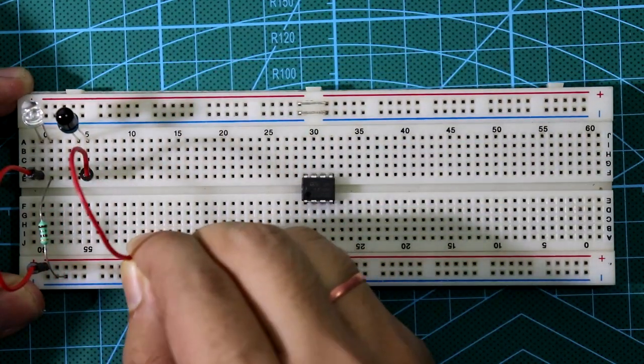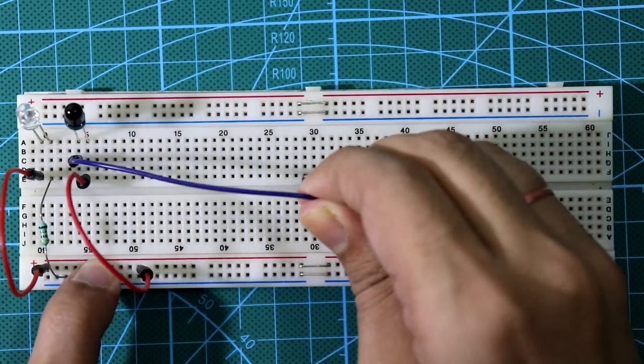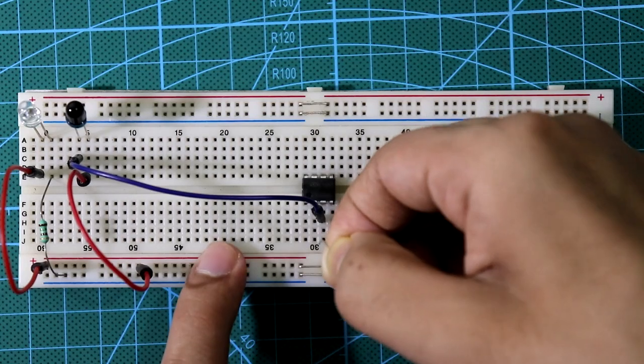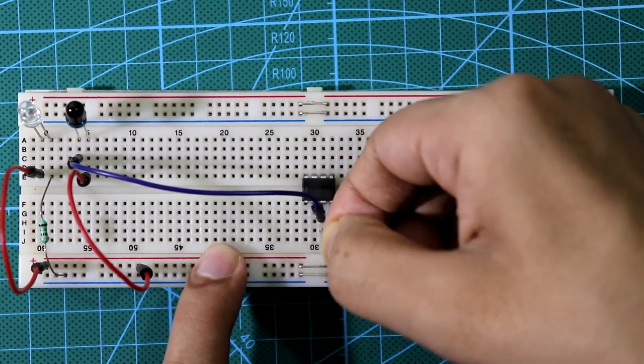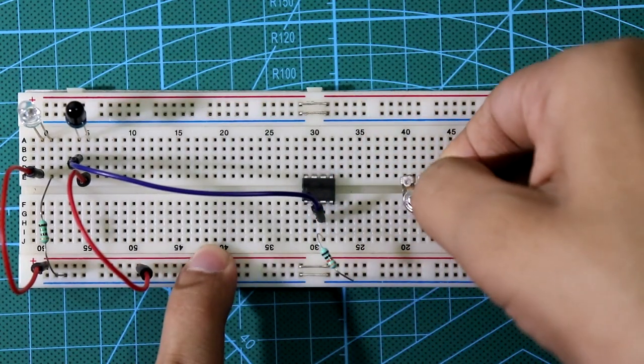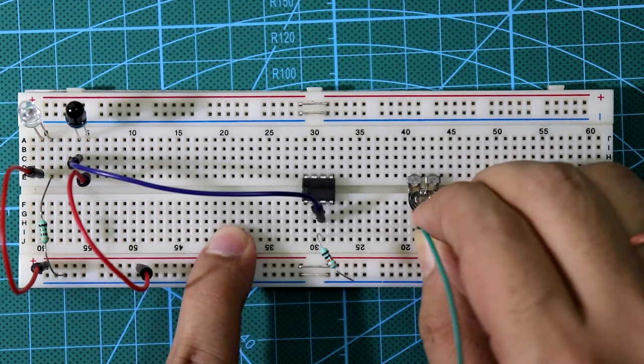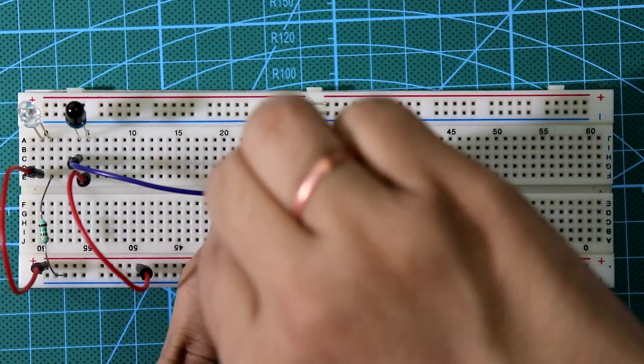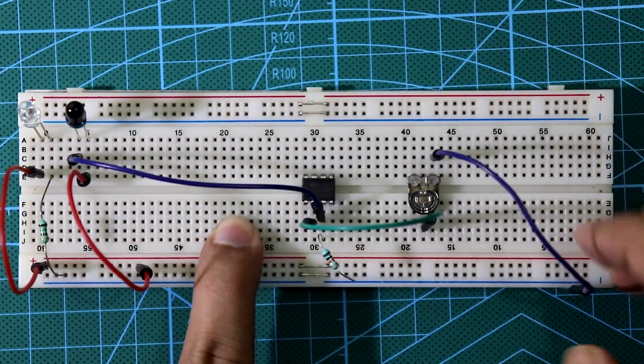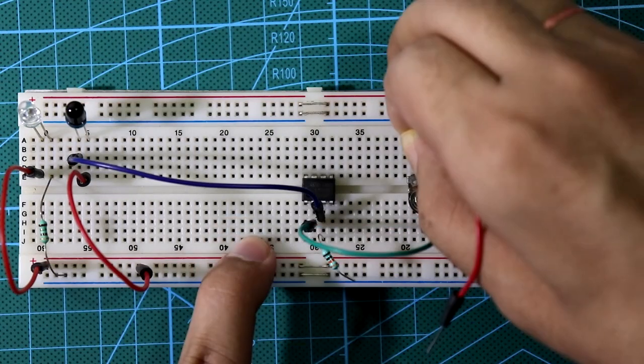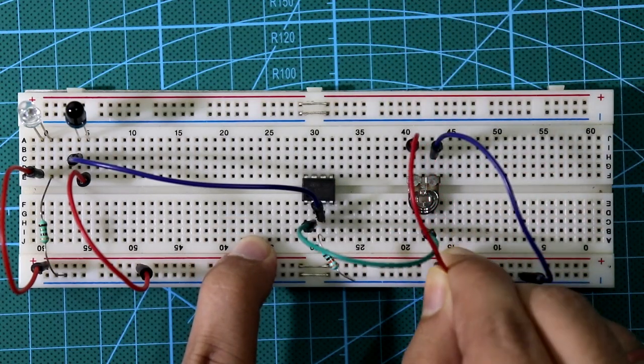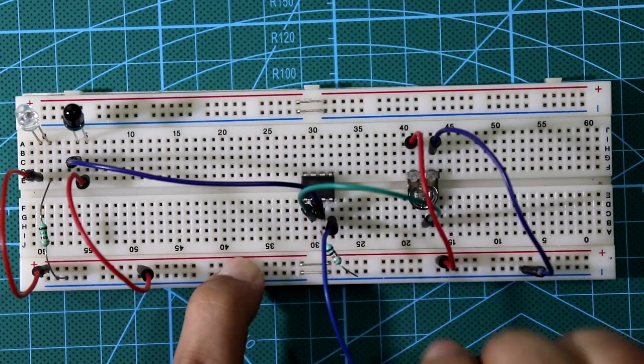The cathode pin of the photodiode is connected to plus VCC. Anode pin is connected to pin number 3. Pin number 3 is pulled down with 10 kilohm resistor. Put one potentiometer. Middle pin of potentiometer is connected to pin number 2. Now one end of the potentiometer is connected to ground, other end is connected to plus VCC.